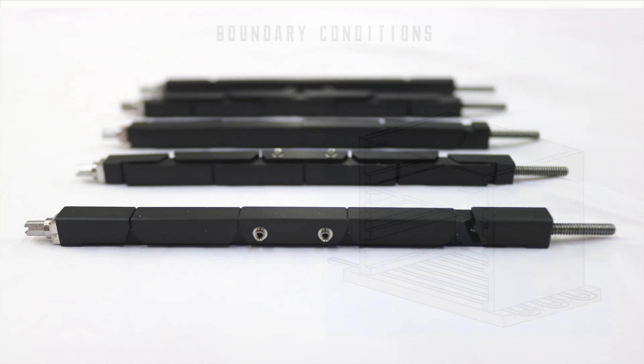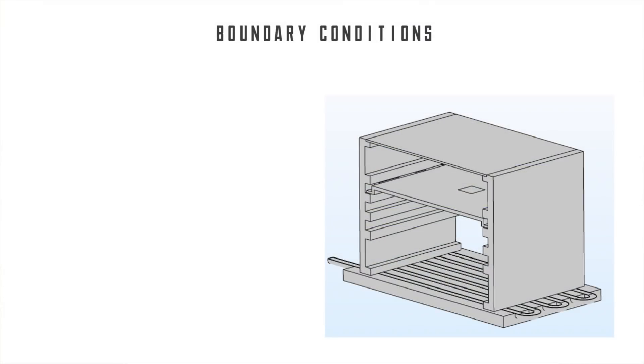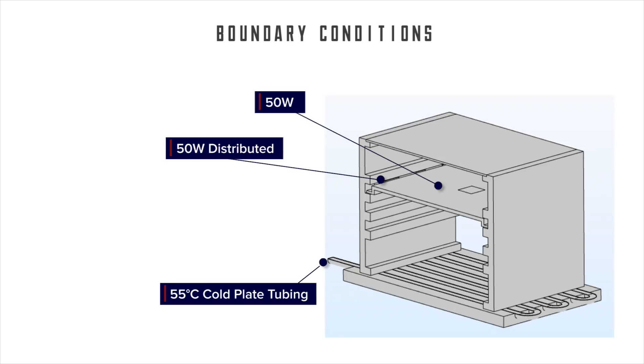Let's see how it works. In this example, the ultimate cooling is provided by a liquid cold plate along the base of the chassis, which runs fluid at 55 degrees C. The electronics board is generating 50 watts concentrated near its center and has additional components totaling 50 watts distributed across the board.